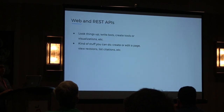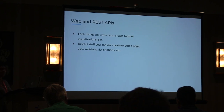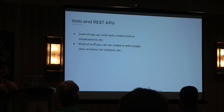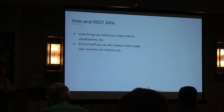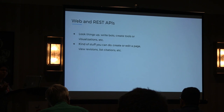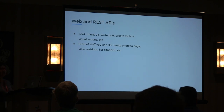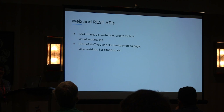So far, the projects and technical areas I mentioned are ones for which we are featuring tasks for new developers or that are documented on our new developers page — the link to which I will share later. From now on I'm going to share areas for which I'm not aware of specific featured tasks, but if you are interested we will be happy to help you connect with folks here. Web and REST APIs allow you to look things up, write bots, or create tools and visualizations. When you query these APIs you get data in XML or JSON format. Things you can do include creating or editing a page, viewing revisions, listing citations, or deleting and merging pages — basically anything you can do through the interface, you can do programmatically.